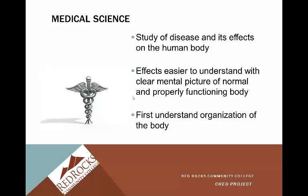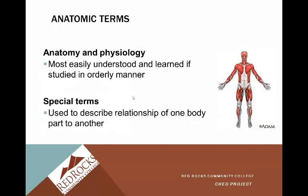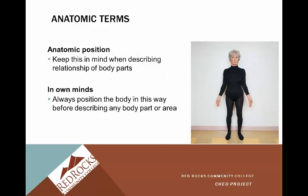You also need to understand the organization of the body. Anatomic terms — basically anatomy — are most easily understood if studied in an orderly manner, which is how anatomy and physiology classes are structured. There are special terms used to describe the relationship of one body part to another, so we're all speaking the same language. For example, the elbow is proximal to the wrist. When describing body parts, always think about anatomic position, as shown here on the right-hand side of your screen.